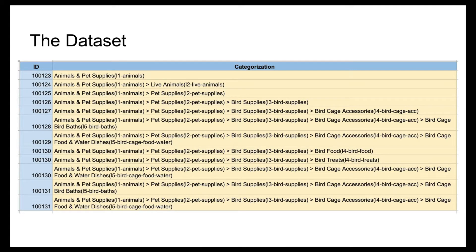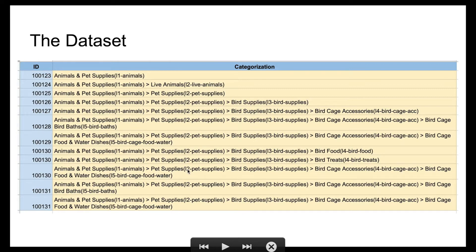So the first goal is to extract the code of the category that each product belongs to. The second goal is that some products belong to multiple categories. For example, product 100130 belongs to the category 'bird food, bird treats' and also belongs to the 'birdcage food and water dishes' category. In cases where a product belongs to multiple categories, we want to see the codes of those products shown in the same column but separated by commas.